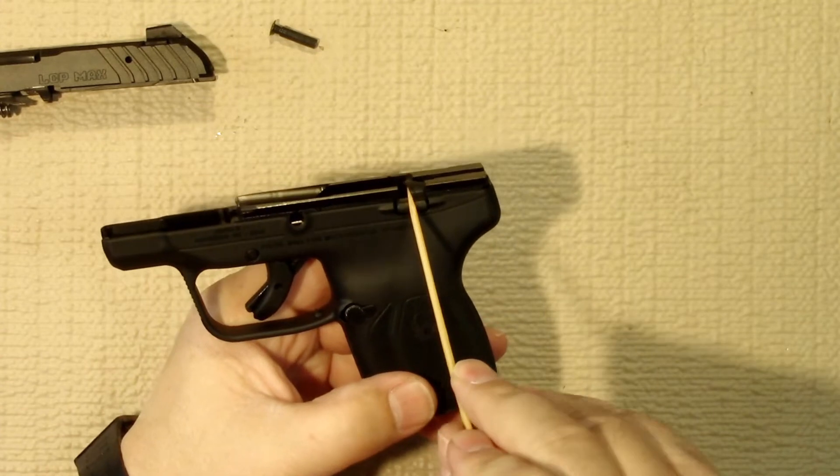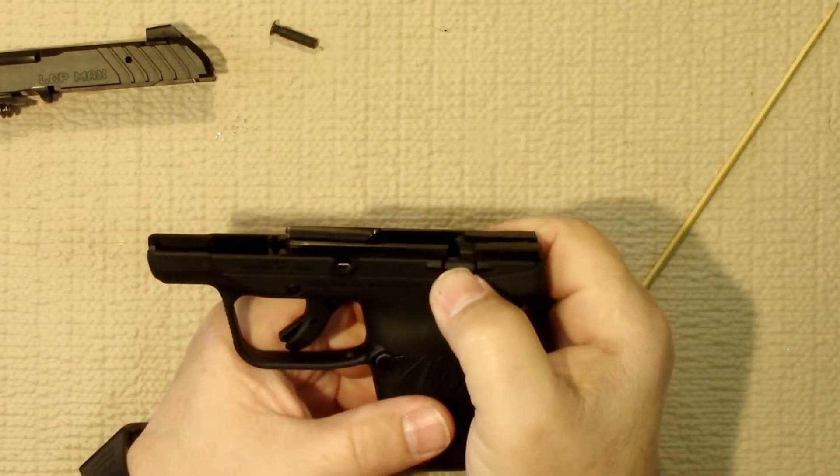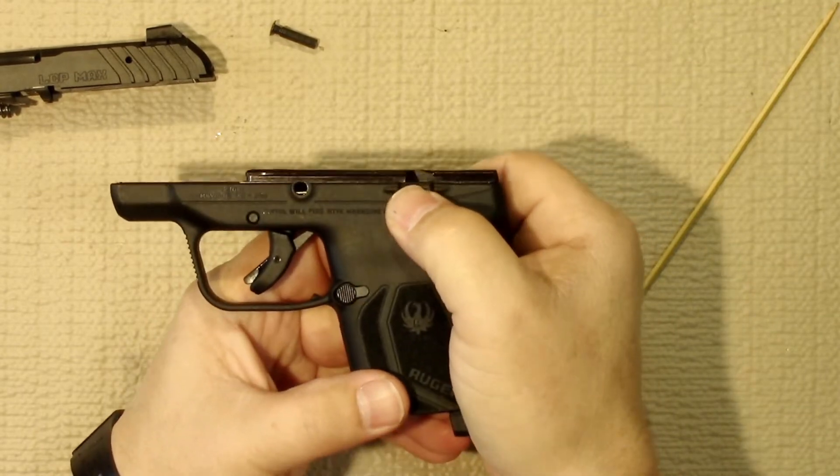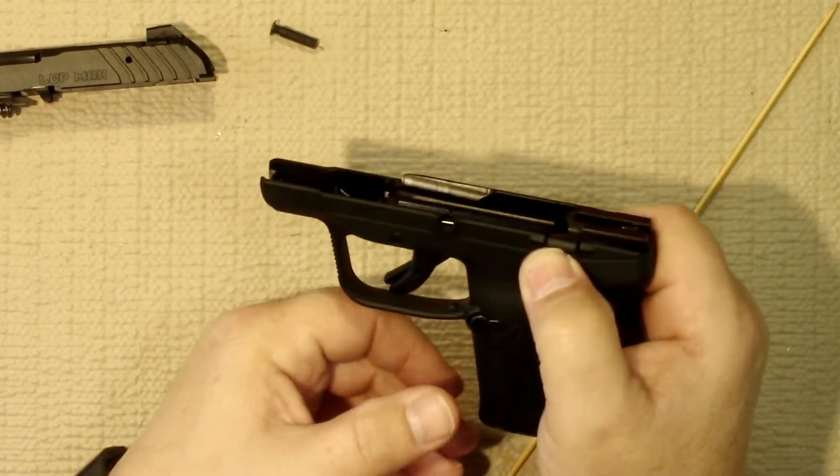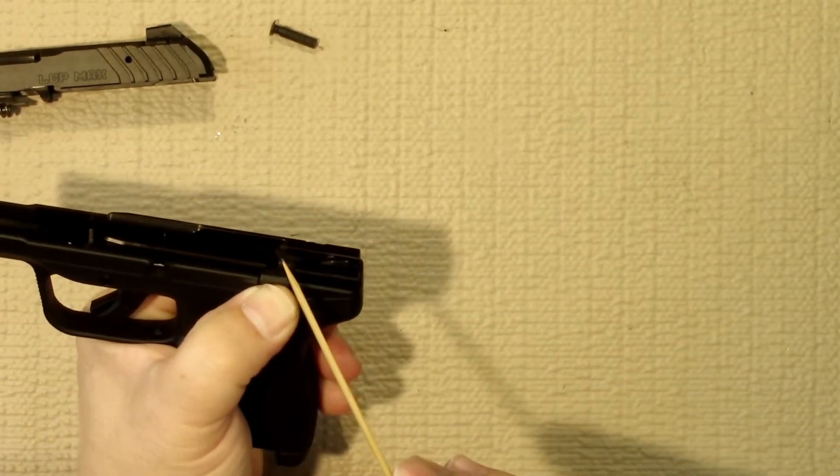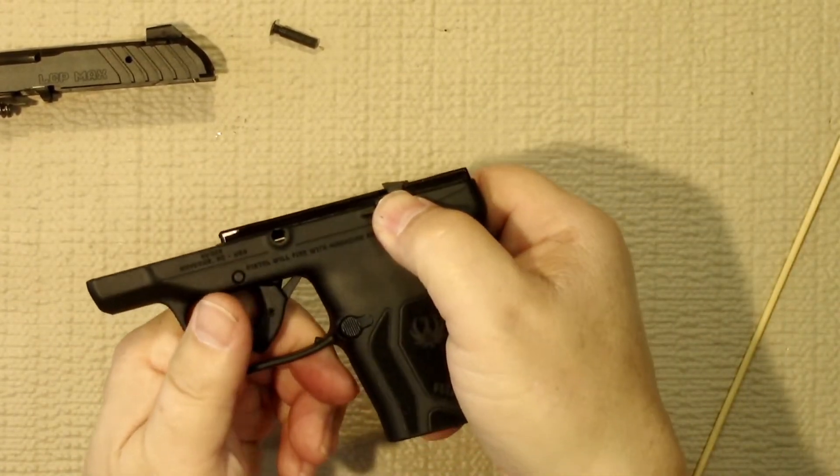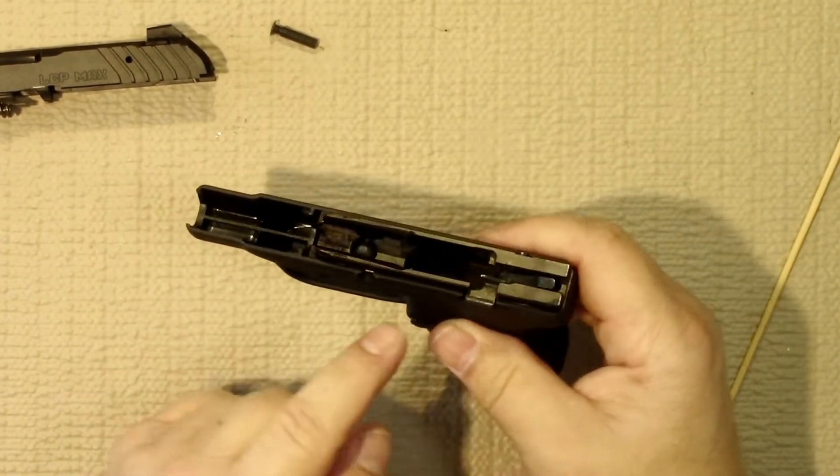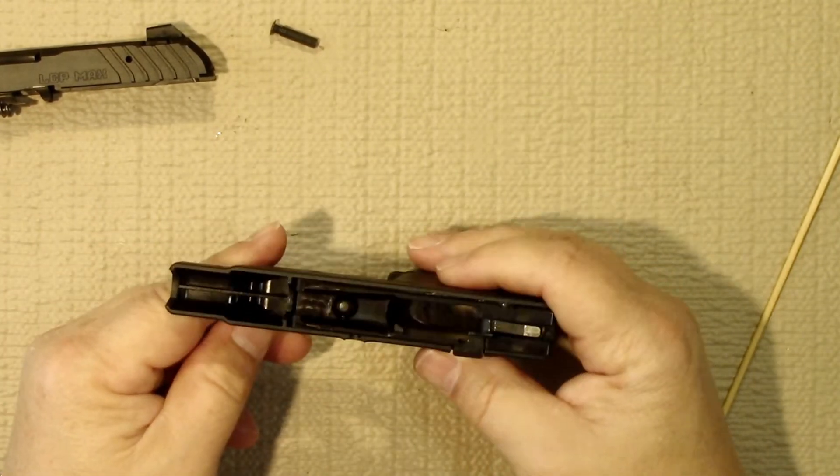This little section here is the ejector. It's attached to the lever that also locks the slide back. The back portion of this right here will lock the slide. The front portion operates as the ejector. It's kind of hard to see, but that will catch the back of the cartridge case and kick the cartridge out of the firearm when it fires.